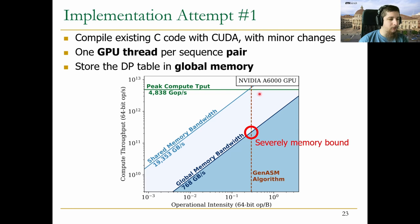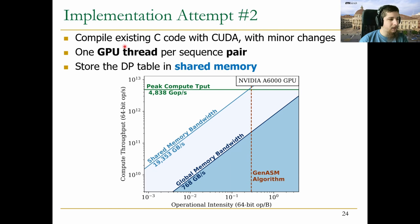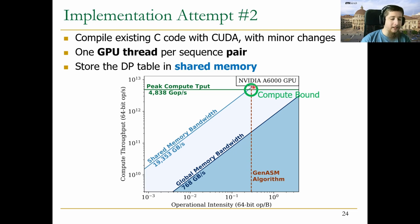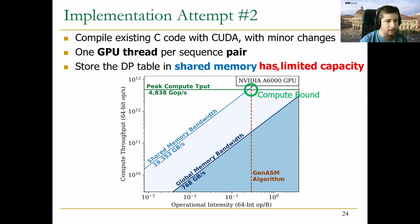As a second implementation attempt, we could keep everything the same but replace global memory with shared memory for the DP table. Shared memory has much higher bandwidth since it's on-chip and very close to the actual functional units of the SM. According to the roofline model, we could now be compute bound, at least in theory. But shared memory has much, much lower capacity compared to global memory, and in this context we should look at how much of an issue that will be.